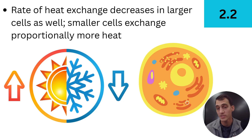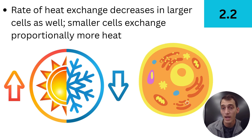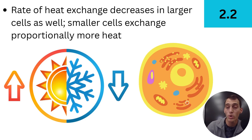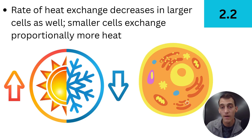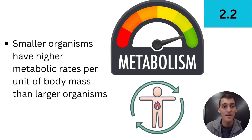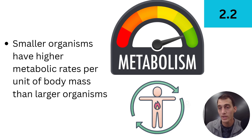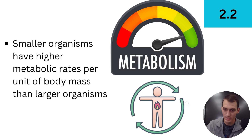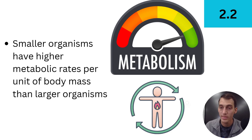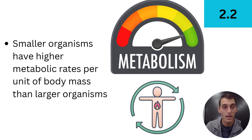Not only can larger cells not exchange materials as efficiently, but the rate of heat exchange also decreases in larger cells. The heat produced by a larger cell does not dissipate as easily as it does in a smaller cell. Smaller cells exchange proportionally more heat because they have more surface area per unit of volume. Secondly, smaller organisms tend to have a higher metabolic rate per unit of body mass than larger organisms. Larger organisms require greater metabolism — more reactions and faster reaction rates. So smaller organisms tend to be more efficient with their reactions and their metabolic rates.